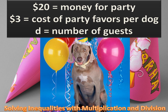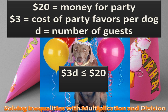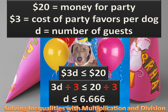Could we write that as an inequality? Sure we could. Let D equal the number of dogs we invite. $3 times D has to be less than or equal to $20. We divide both sides by 3, and we get D is less than or equal to 6.666. You couldn't invite 6.666 dogs — dogs only come in whole units. Could you invite 7? No, because 7 is too big. The first whole number less than 6.666 is 6, so D has to be less than or equal to 6.